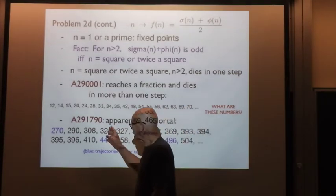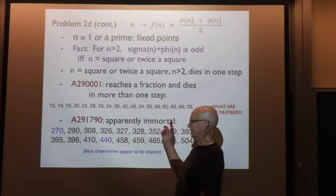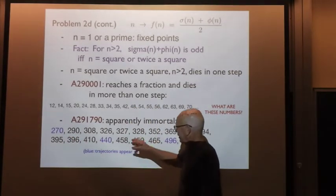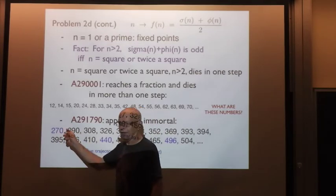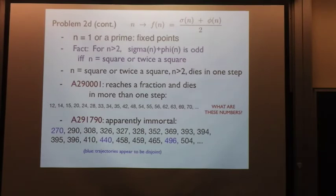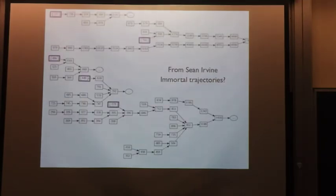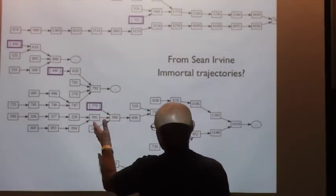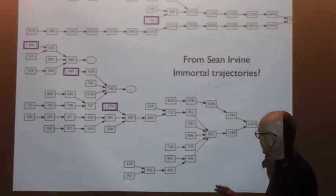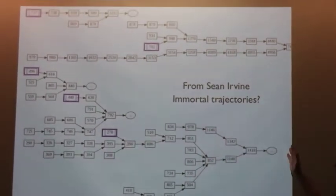And then there are the numbers that are apparently immortal. 270 is the first one. 290 is another, but they merge after a while. The blue ones seem to be distinct. Here's a picture from Sean Irvine showing some of the different trajectories. From his work, it looks like we know at least nine distinct trajectories — distinct as far as he's been able to compute them.